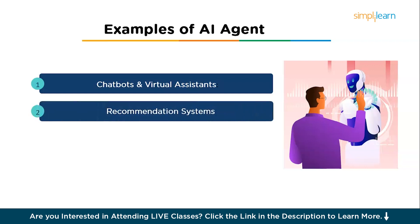Recommendation systems are AI agents that analyze a user's behavior and preferences to provide personalized suggestions. Netflix recommends movies based on your viewing history, while Amazon suggests products based on previous purchases. These systems use algorithms that look at past interactions and find patterns indicating what you might enjoy. In e-commerce, personalized recommendations can increase sales by showing products most likely to be purchased by individual users.